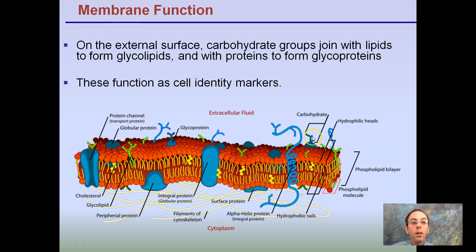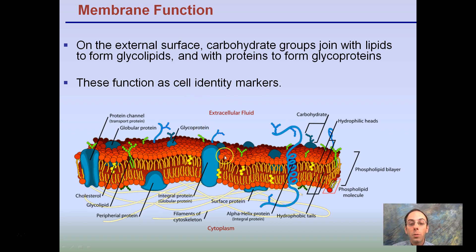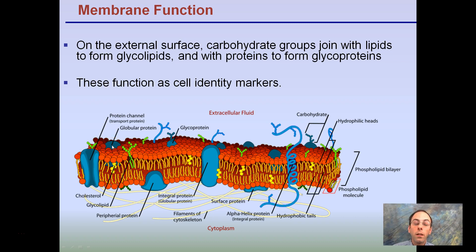Looking at that same picture again: the external surface carbohydrate groups joined with lipids form glycolipids, and with proteins form glycoproteins. These function as cell identity markers — an important aspect. It's kind of like you wearing your ID in school. This is a way for cells to identify what they're bumping into, or how one cell is different from another.